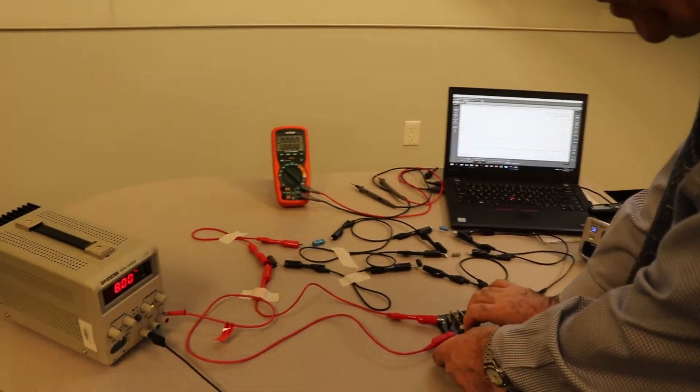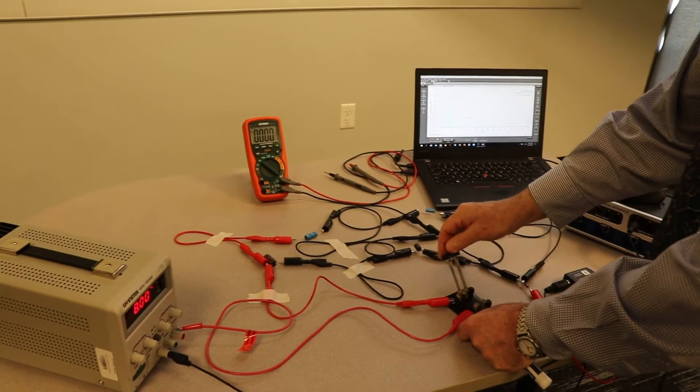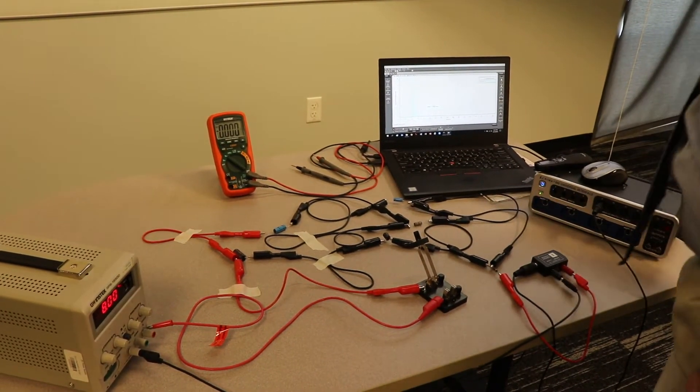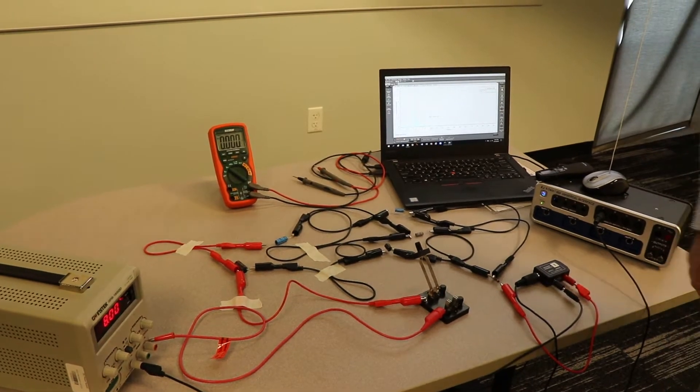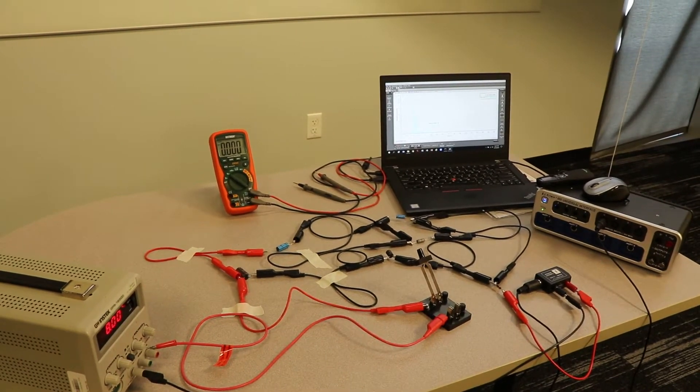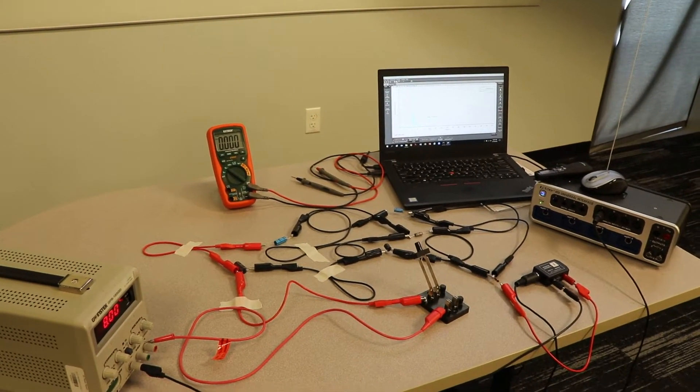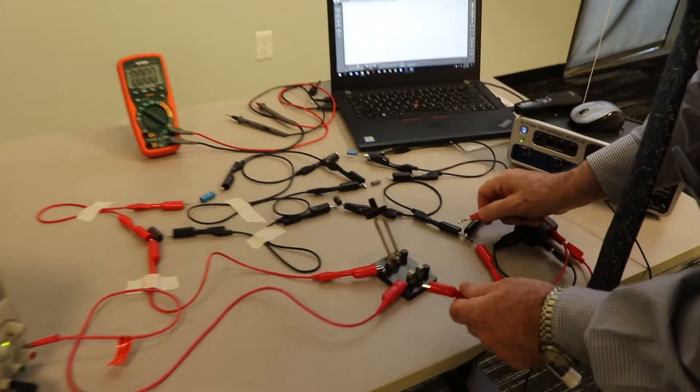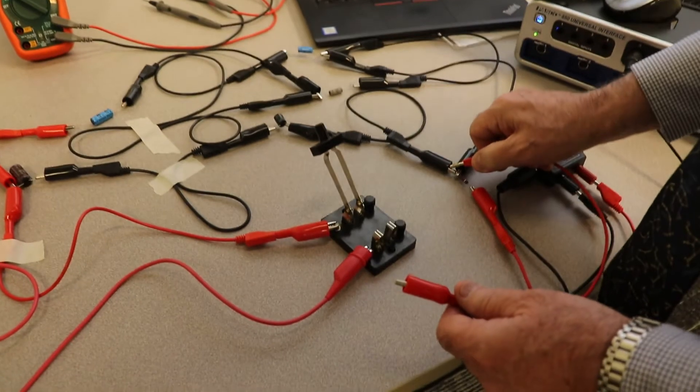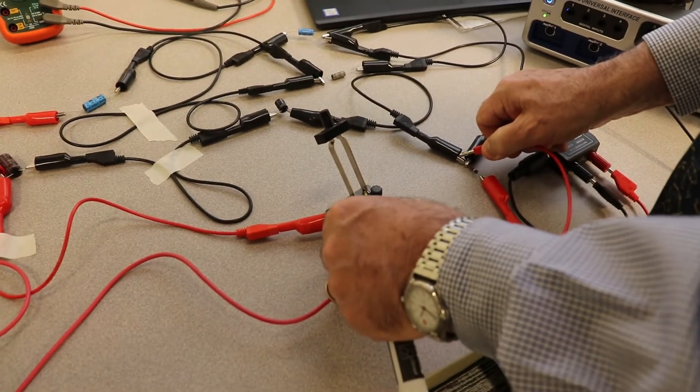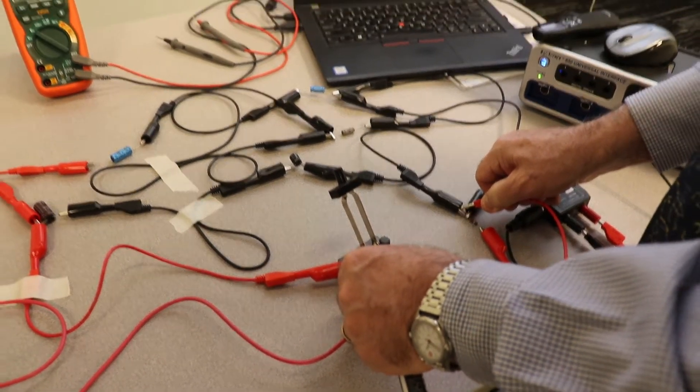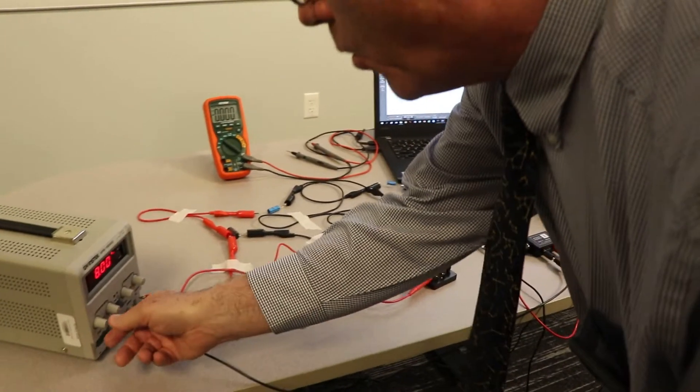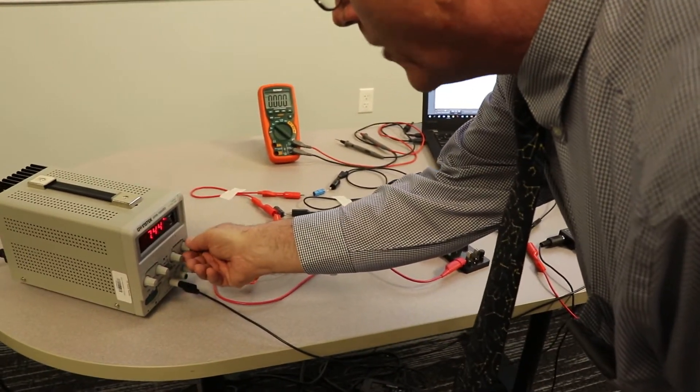So now what you would do is you'd open this thing up now, open the switch, and you'd take a lead—I had a lead, let's see, here's one right here—and I'll take a lead and then I can empty out all the charge on the plates. So I touch this side with this side right here and it gets totally discharged.